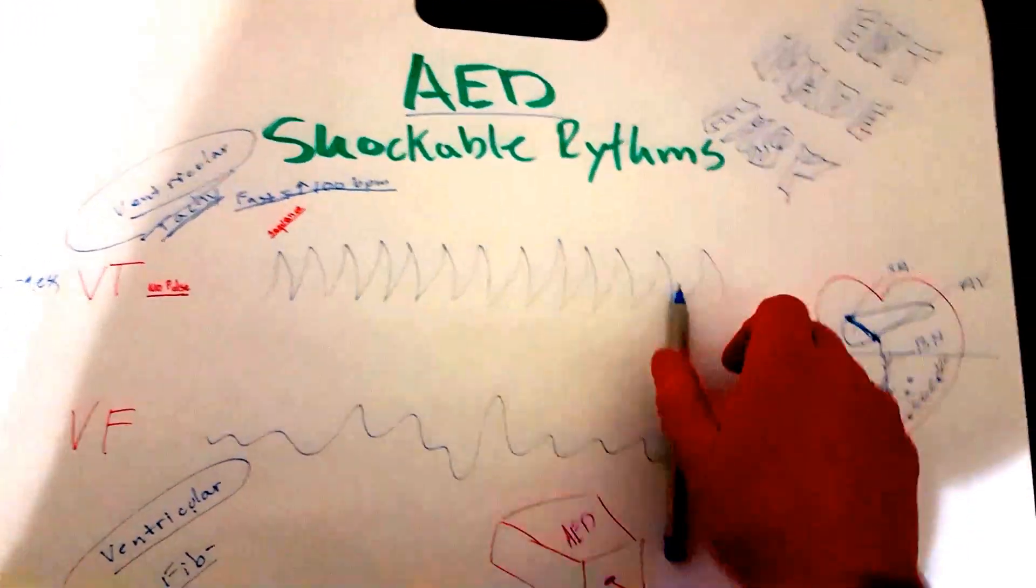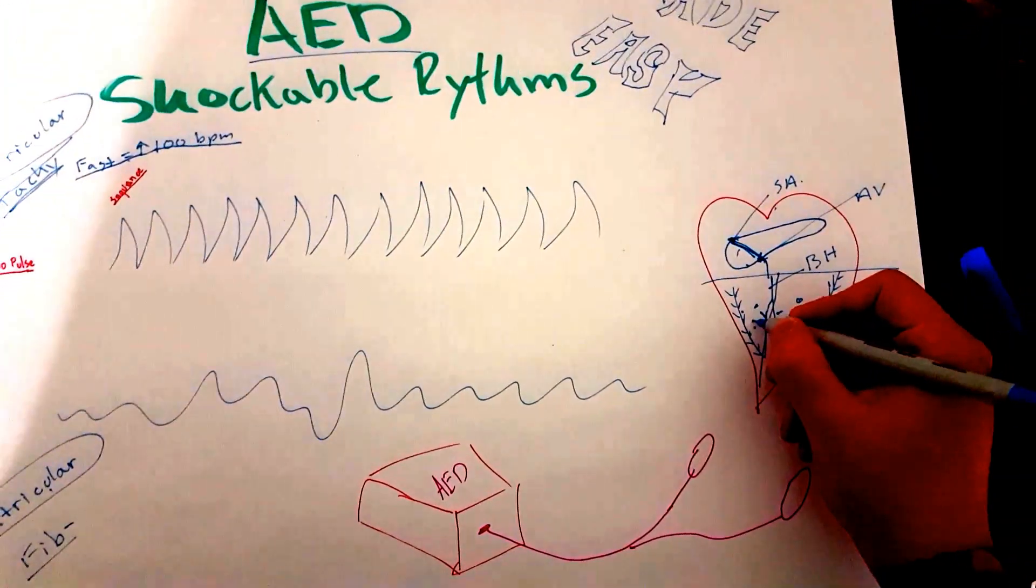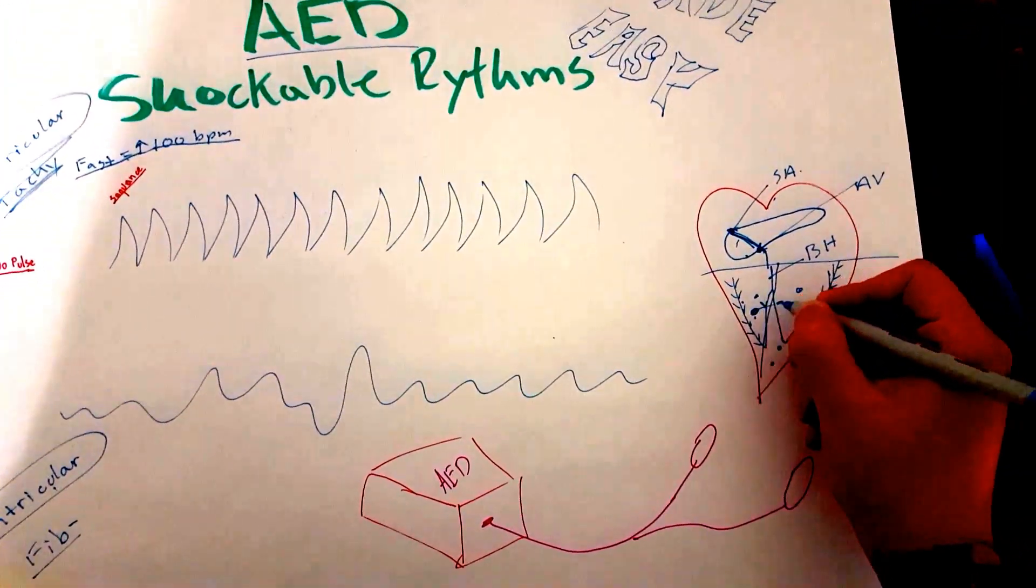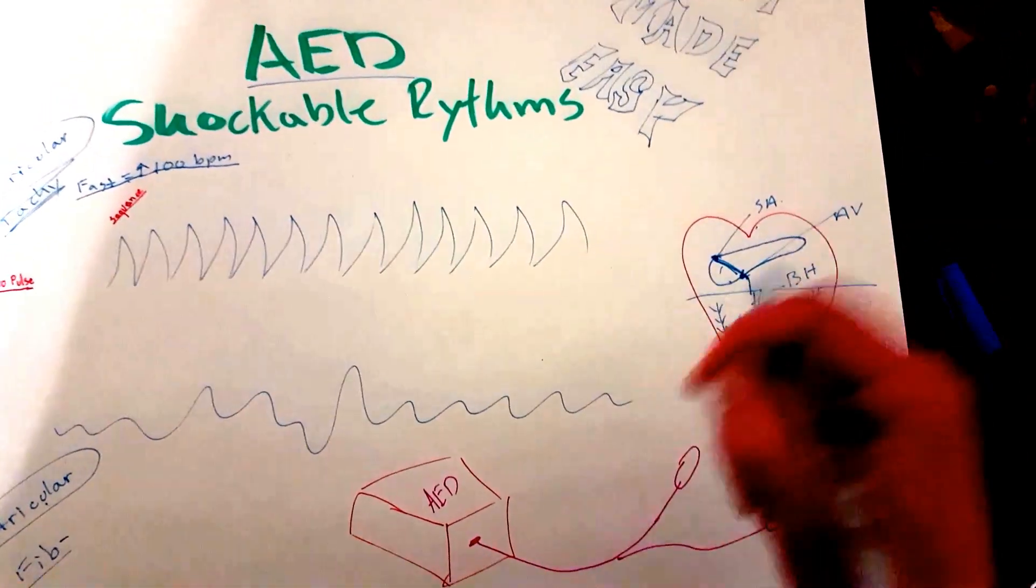With VFib, let me back up. With VTAC, the electricity may just be in one little section, and it's sparking off its own little signal continuously, really, really fast.